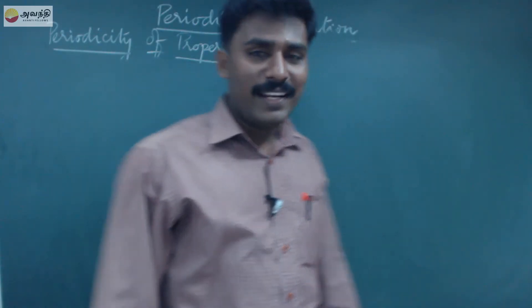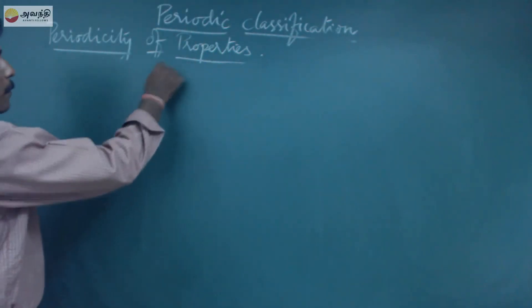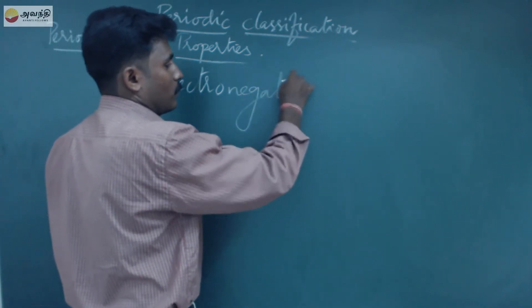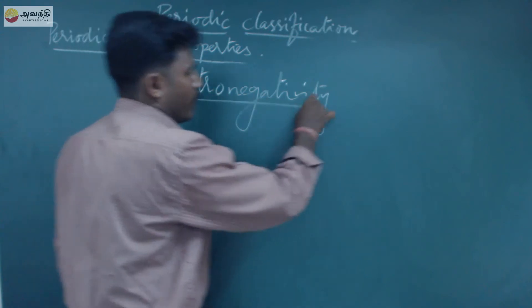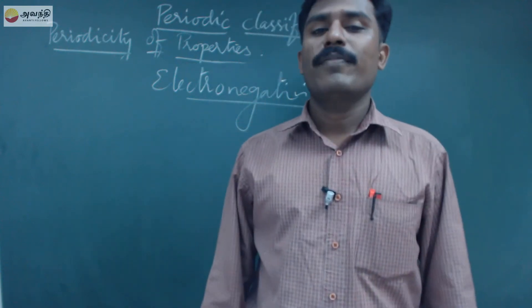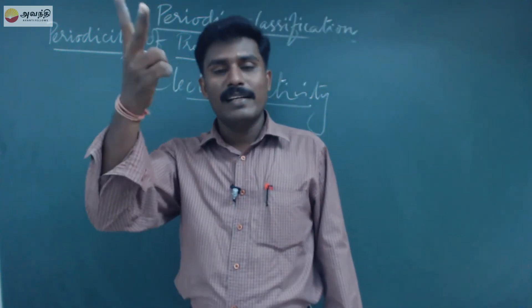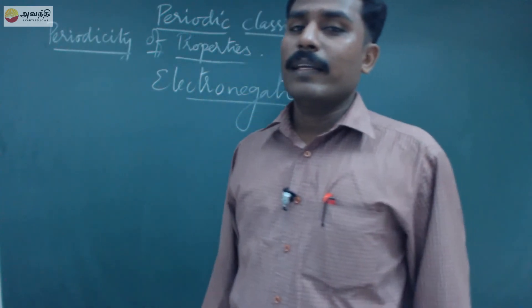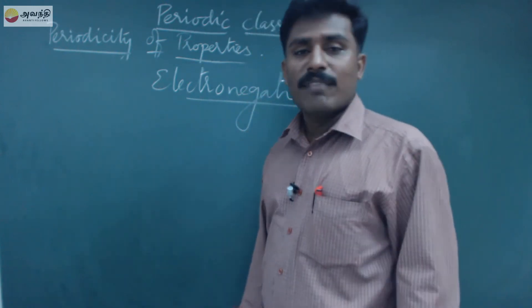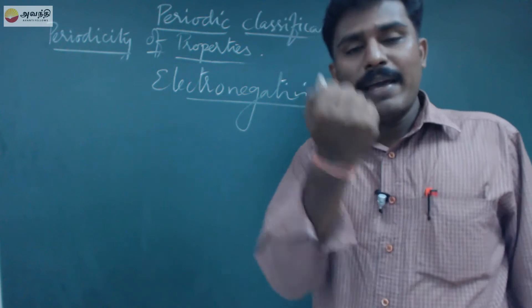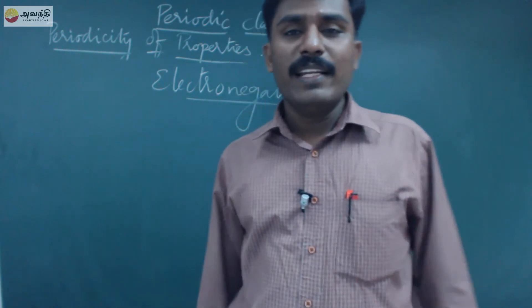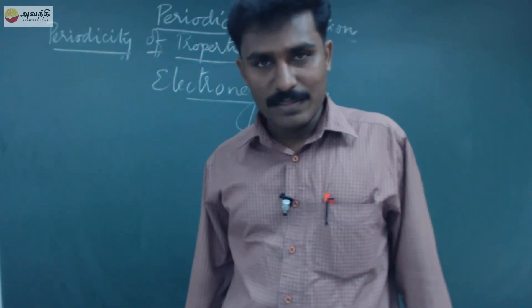The next important topic is electronegativity. Electronegativity may be defined as the relative tendency of an atom in a molecule to attract a shared pair of electrons towards itself. Going down the group, electronegativity decreases. In a period, electronegativity increases.